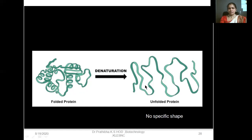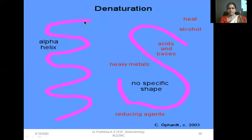After the denaturing agent acts, you can see — for example — the alpha helix present in the secondary protein structure. After treatment with denaturants like acids and bases, heat, alcohol, reducing agents, or heavy metals, you can see the denatured polypeptide chain, which does not show any specific shape.